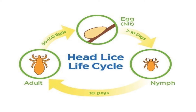The nymph becomes adult lice. And then after that, the adult lice will lay another egg — around 50 to 150 eggs.